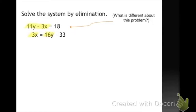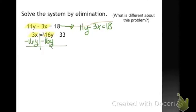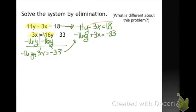But actually, I can easily rewrite the second equation. So I'm just going to move my first equation over. And then I'm going to move the 16y to the other side of the equal sign, and I have to do that using an inverse operation, because I can't just move something willy-nilly across an equal sign. So this is going to give me negative 16y plus 3x equals negative 33. And when I do that, I can see that I have opposites.